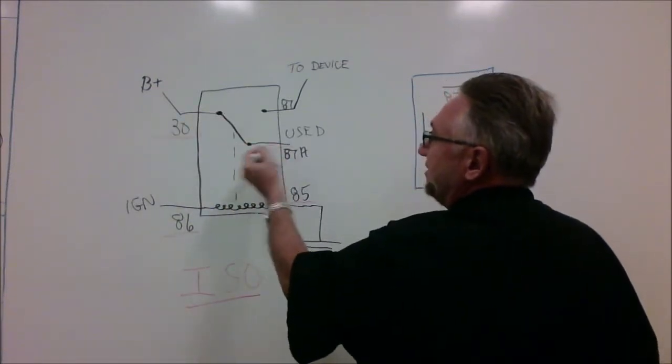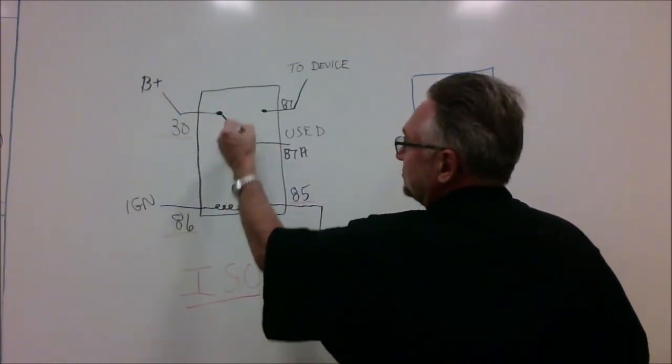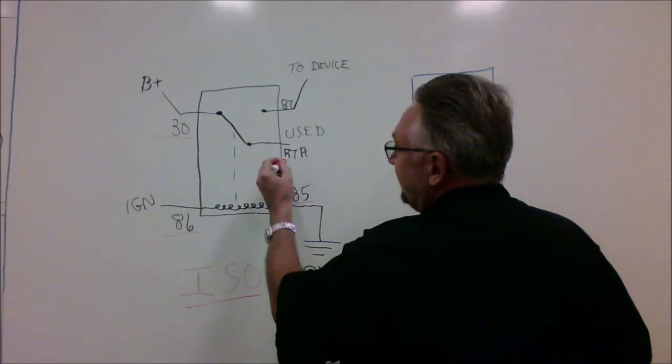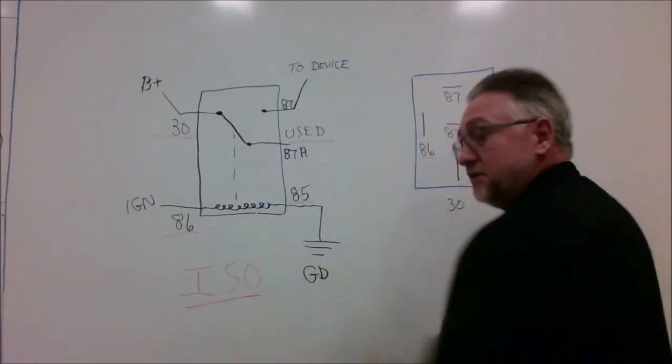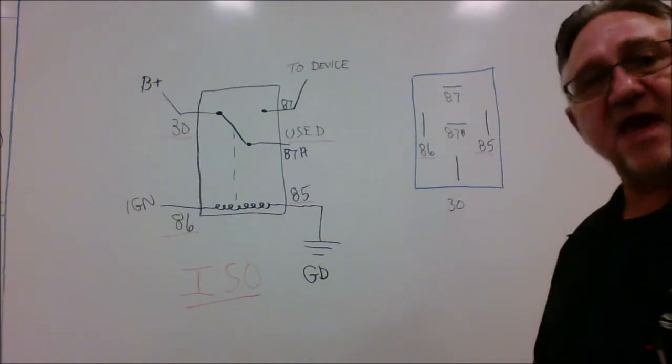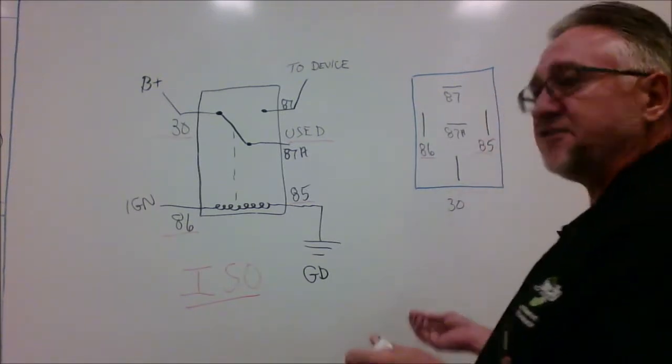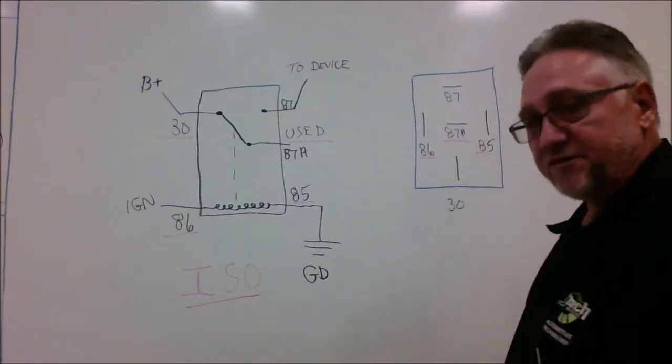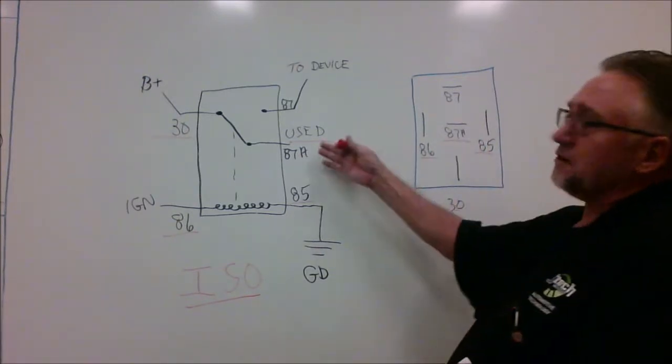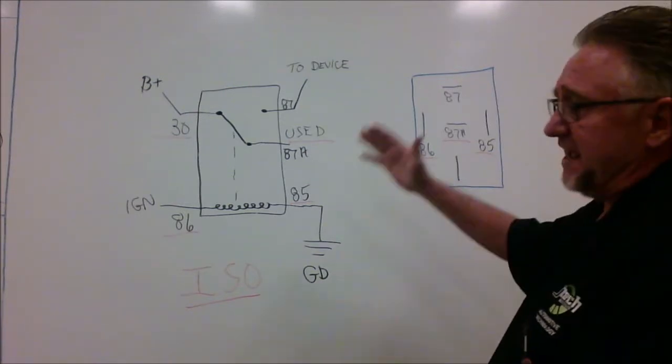As you can see, it's tied into 87 alpha, which is not used. 87 alpha can be used, but in most instances the center pin, which is right here, is not used, 87 alpha. All right, you could use this if you wanted to, say on a fan or something and had a timer on it.